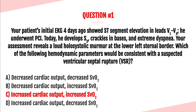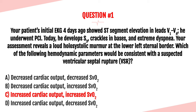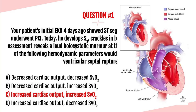The answer is C, increased cardiac output and an increased SVO2. This question gave us all of the signs and symptoms of a ventricular septal rupture and then told us exactly what it was. However, sometimes they only give you the symptoms and you have to figure it out from there. This patient had V1 through V4 ST elevation, meaning he had an anterior infarction. An anterior or anteroseptal infarction puts you at high risk for ventricular septal rupture. He also had a new systolic murmur at the lower left sternal border, which should alert you to a possible ventricular septal rupture.